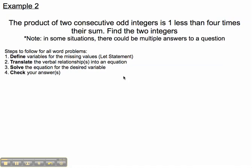It says the product of two consecutive odd integers is one less than four times their sum. We're going to find the two integers. Before you can do anything, you should define the variables.